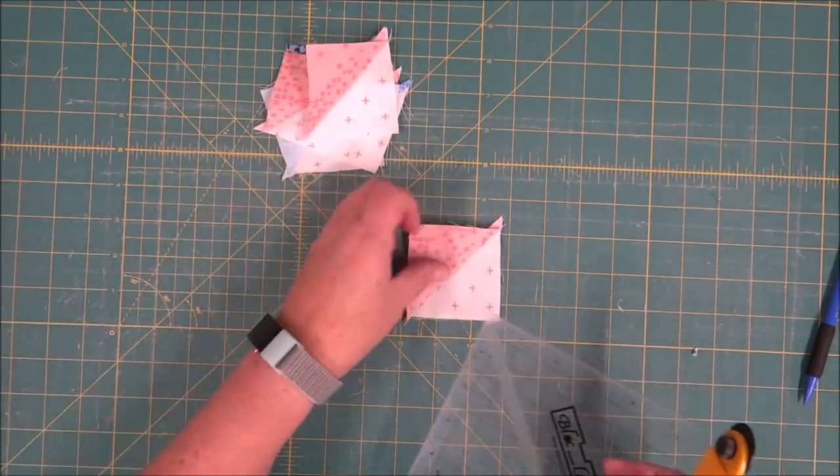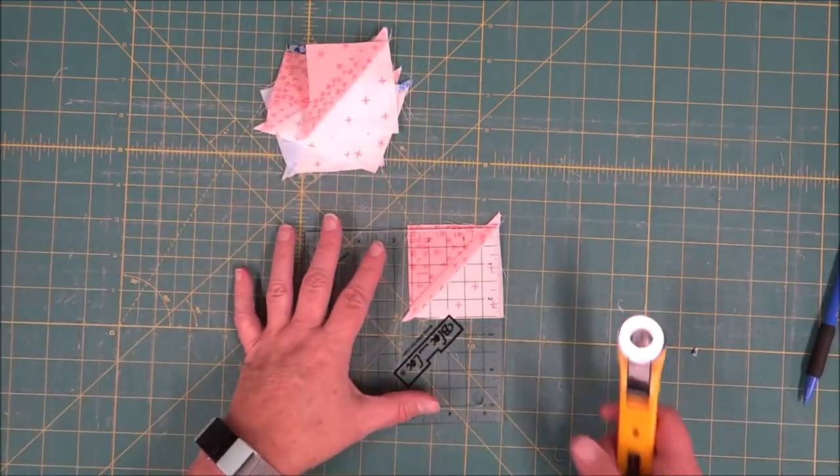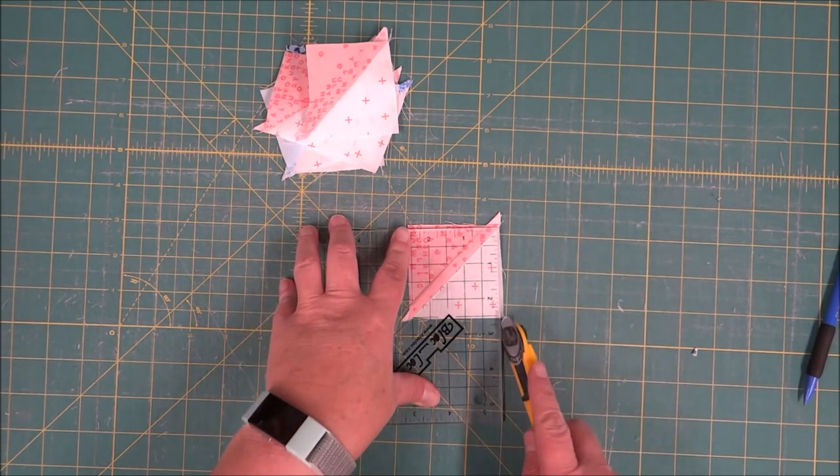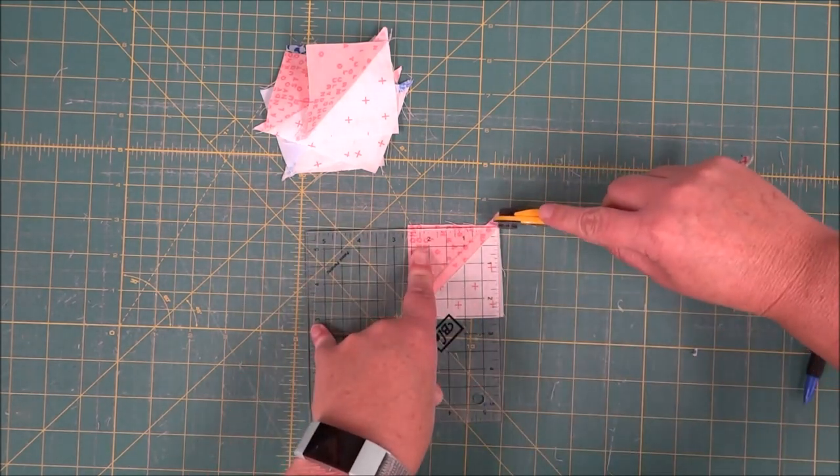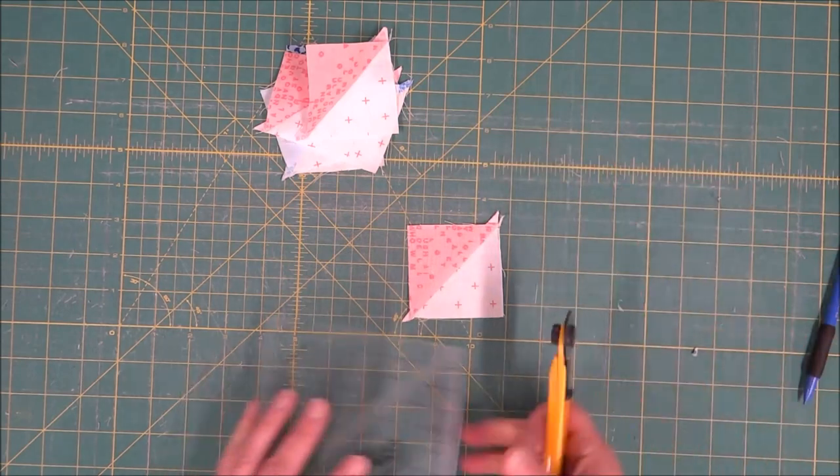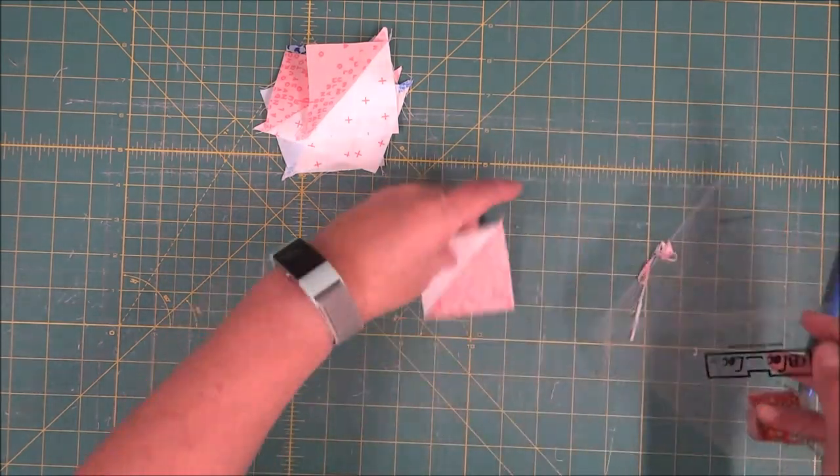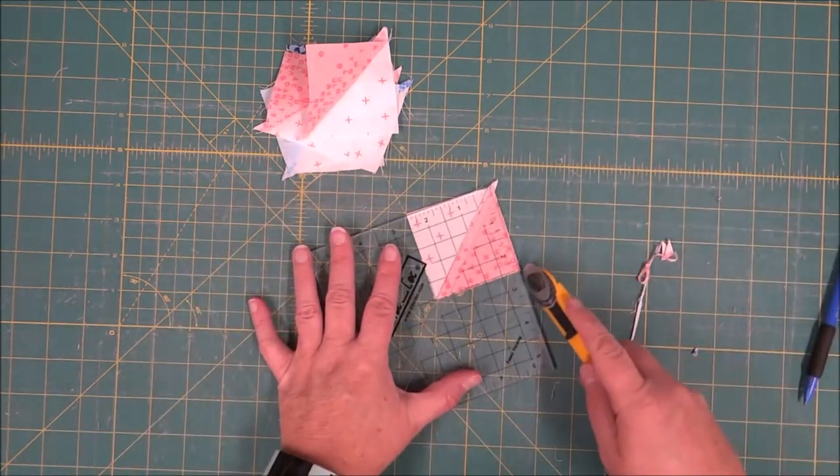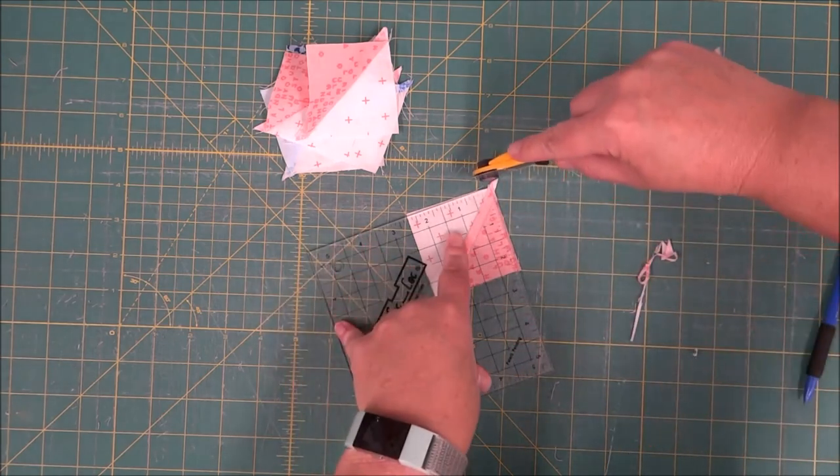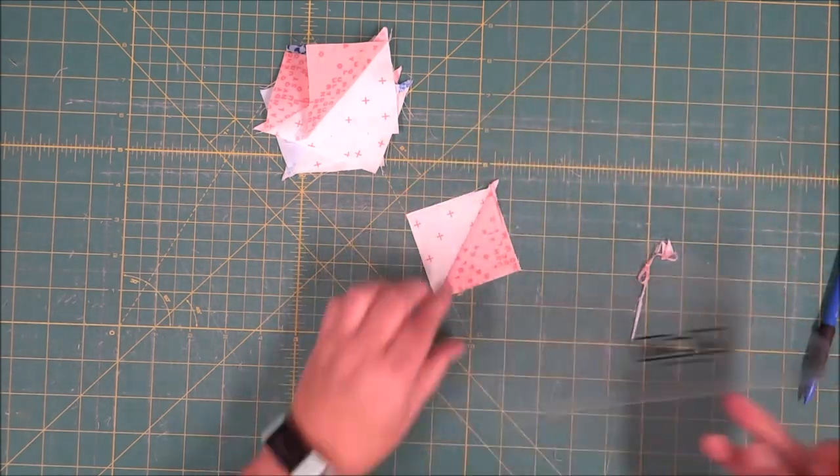So now that we have them all pressed, we're just going to use a ruler to square them up. I'm using my block lock ruler, which works really well. We're going to repeat this process for each of the blocks that we have cut.